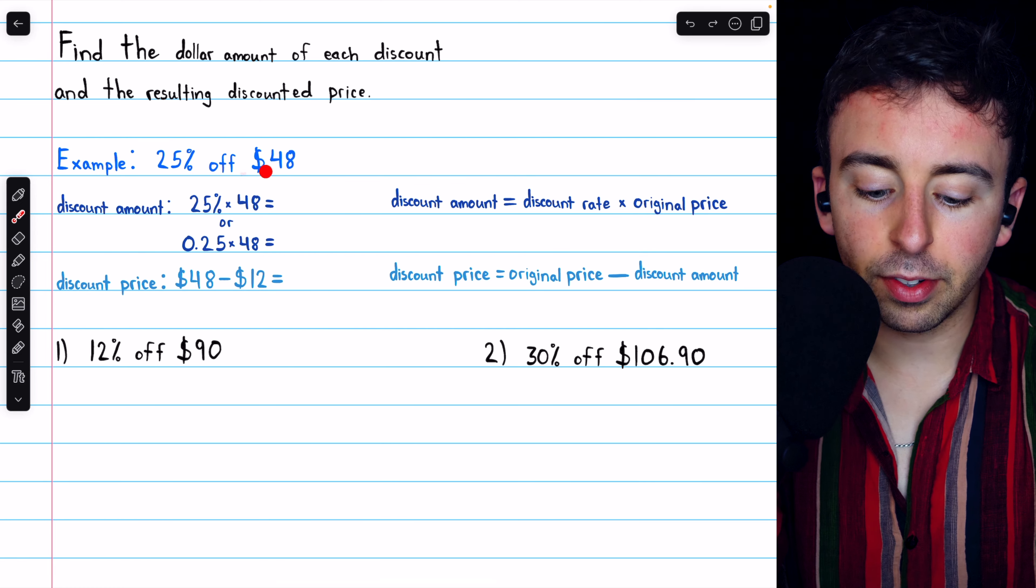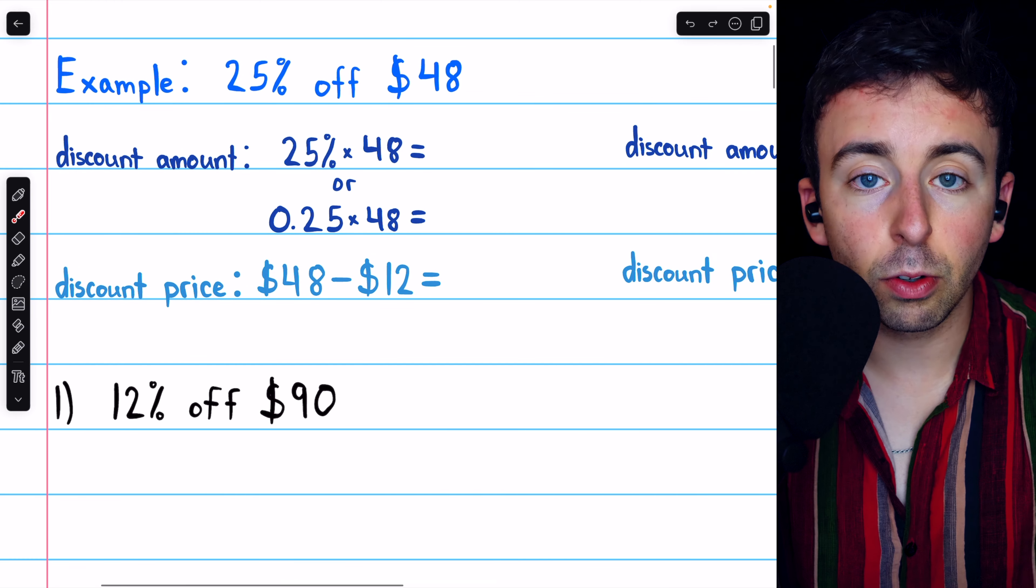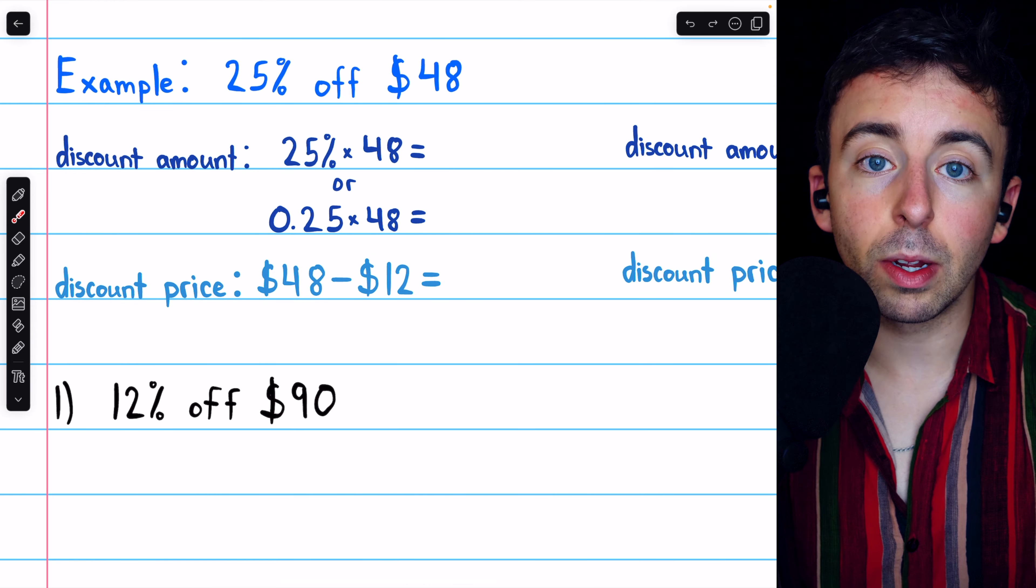If the discount is 25% off $48, we can find the amount that's actually being discounted, the amount that's being taken off, by doing multiplication.